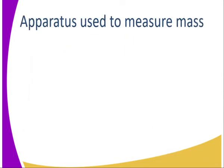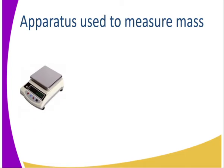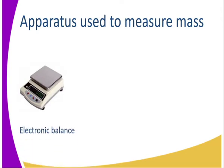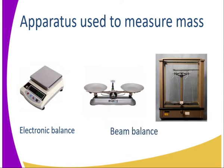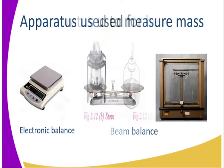It means we also have apparatus which may give us approximate volume of a given liquid. What about apparatus used to measure mass? Commonly we have an electronic balance or weighing machine, and we also have the locally used beam balance that we normally use to measure mass in our day-to-day activities.